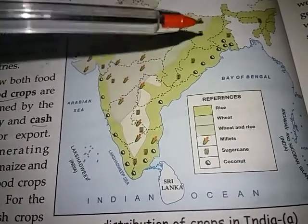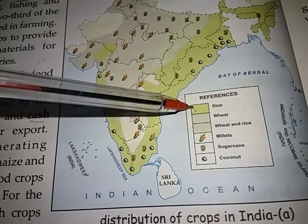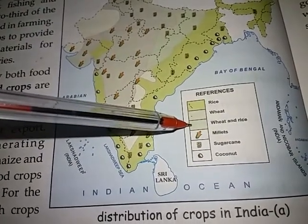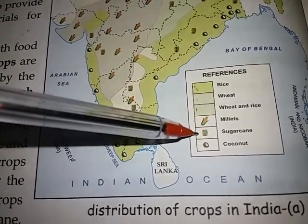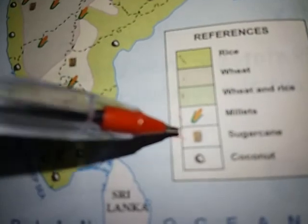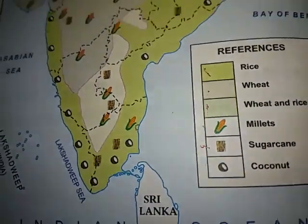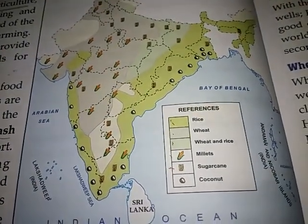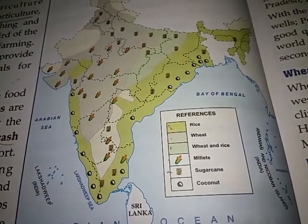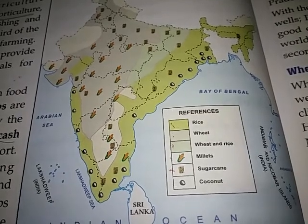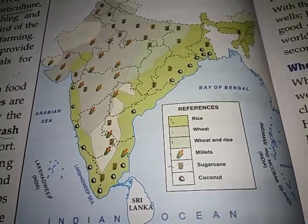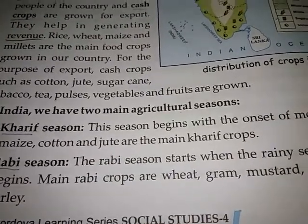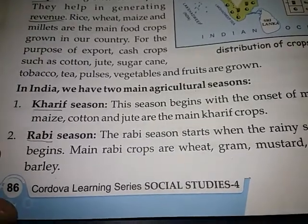On this map, different colors indicate different crops. This color indicates rice, this color indicates wheat, this color indicates millets, this is sugar cane, and this is coconut. By looking at the different marks, we can understand which particular state grows which crop.